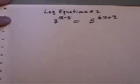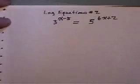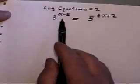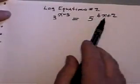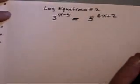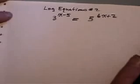Log equation question here. We have an exponent question. The unknowns are in the exponents. We have two different bases and there's no way we can have three and five change both into the same base.